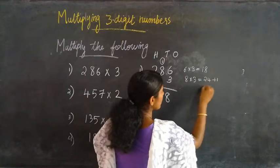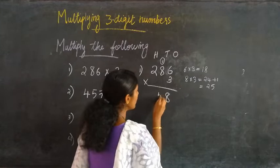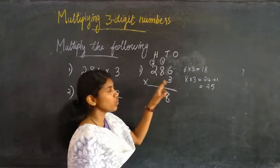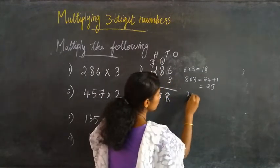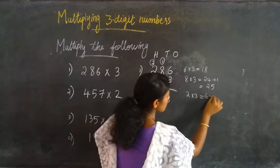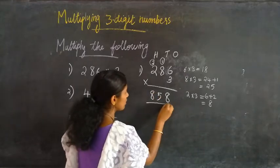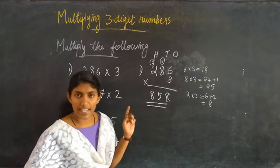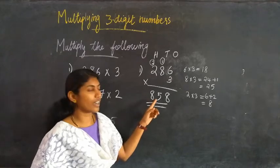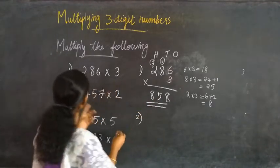8 into 3 equal to 24, plus 1 that is equal to 25. So writing 5 here and 2 is carried over. Then 2 into 3 equal to 6, plus 2 is equal to 8. Writing 8 here. Therefore 286 into 3 equals 858.